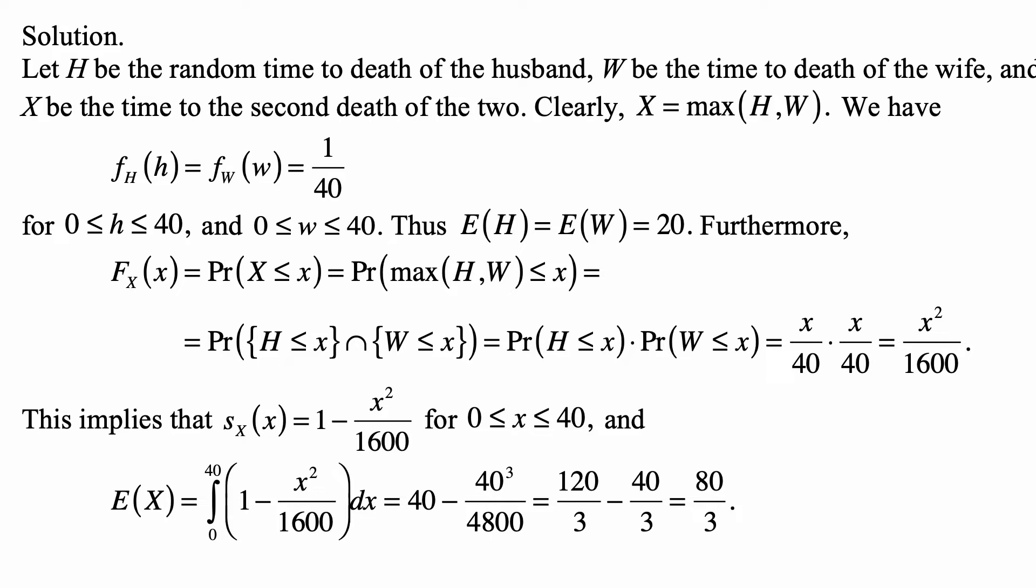But because they're independent, that's the product of those two probabilities. And that's x over 40 times x over 40, so it's x squared over 1600. And this implies that the survival function of x is 1 minus x squared over 1600, for x between 0 and 40.